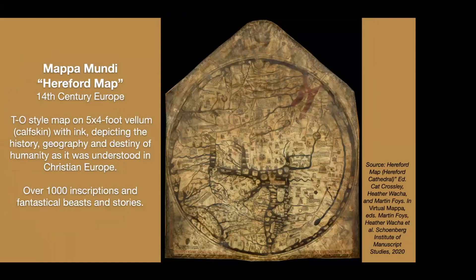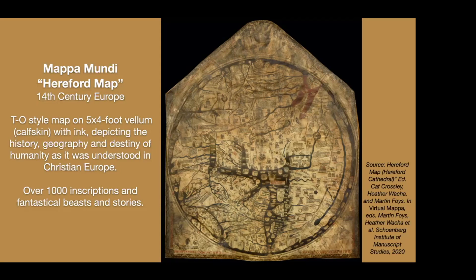The very famous Map of Mundi from the 14th century is another T and O style map. This is huge — a four by five foot piece of vellum, which is calfskin with ink, depicting the history, geography, and destiny of humanity as understood in Christian Europe. There are over a thousand inscriptions on this map and all sorts of fantastical beasts, but the ocean is around the outside in a circle — a modified T and O map.